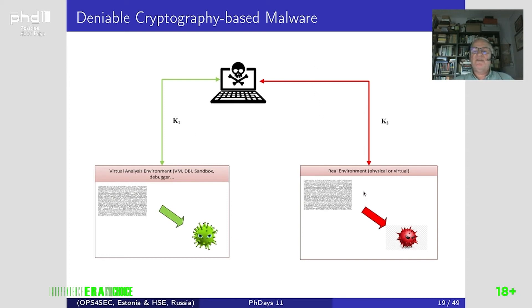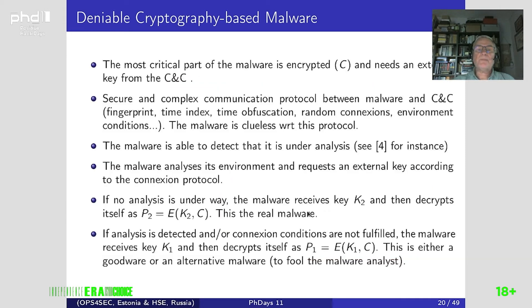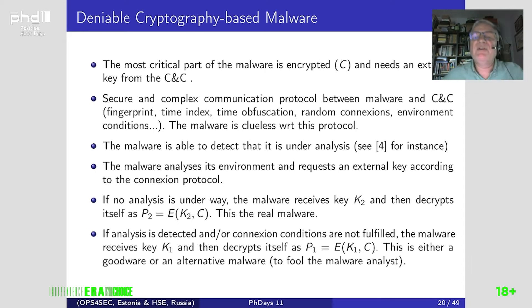Since the analyst cannot block the identification of a current analysis environment, they will never have access to the real malware. We have to embed and consider a secure and complex communication protocol between the malware and the C&C. We use fingerprinting, time index, time obfuscation, random conditions, and environment conditions. It is impossible to simulate this communication protocol, and everything has been implemented such that the malware itself is clueless with respect to the most important protocol parameters.